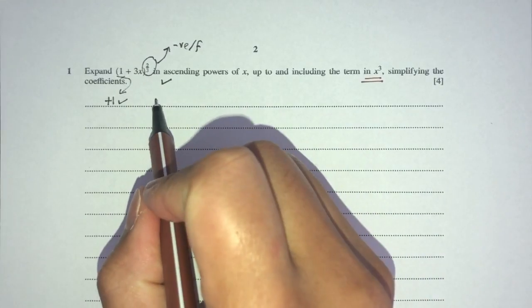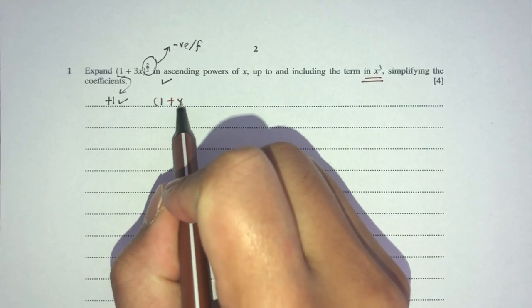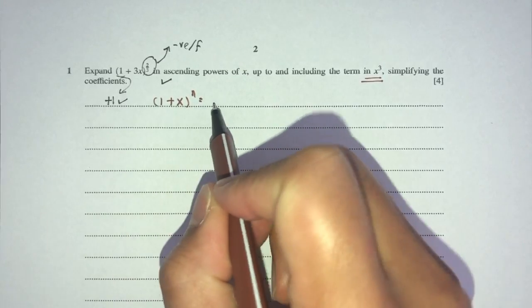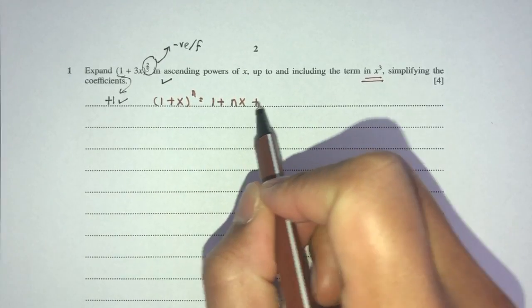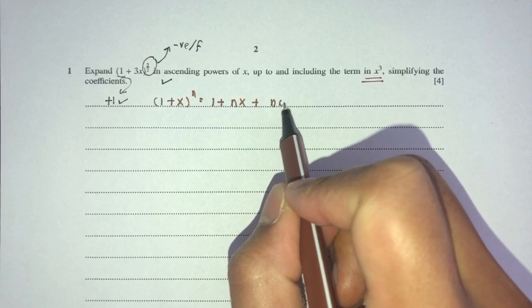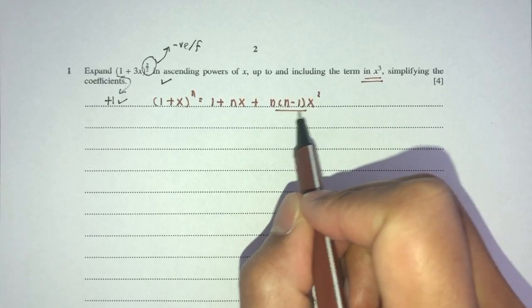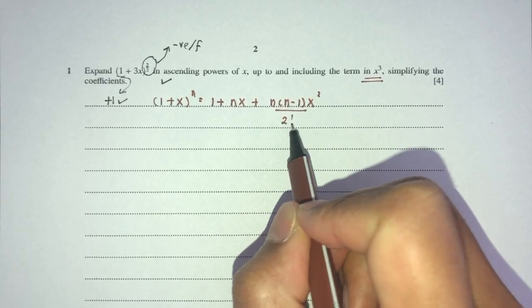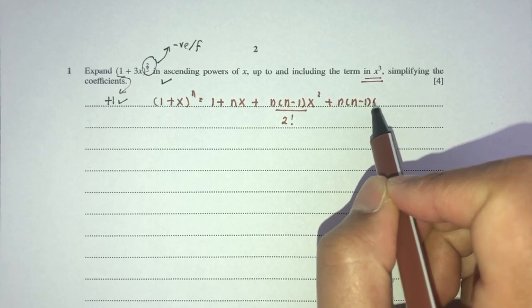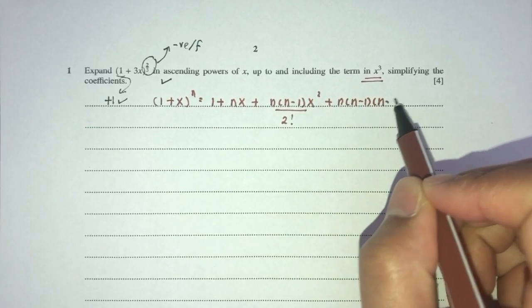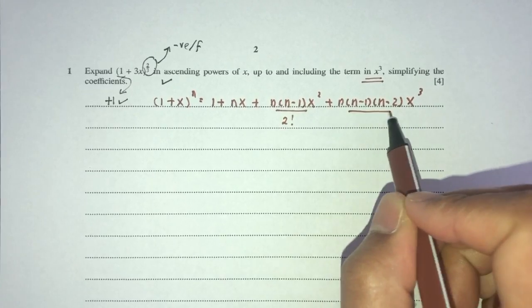For example, if you had (1 + x)^n, this gives you 1 + nx + n(n−1)x²/2! + n(n−1)(n−2)x³/3!.